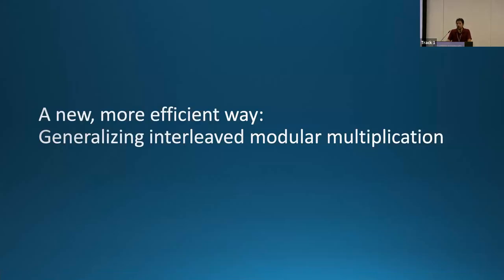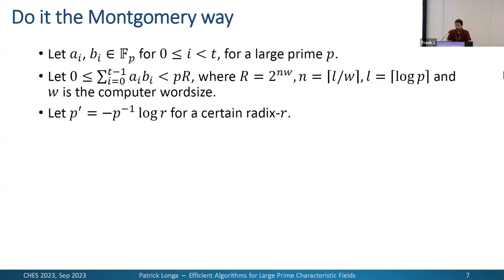In this work, we propose a new, more efficient way to perform this summation of products by generalizing the popular interleaved modular multiplication. Describing it in the Montgomery world — the most common approach — we have our pair of sets A_i and B_i. The summation of products must respect the Montgomery bound P times R, where R = 2^{N*W}, N is the bit size of the prime, and W is the computer word size. We also have P', the Montgomery constant corresponding to radix R.